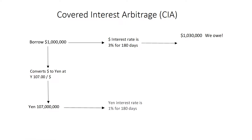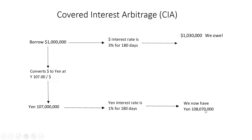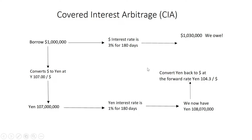Now, we're going to invest that yen at 1% for 180 days. It's going to grow over these six months to 108,070,000 yen. Now what we've got to do is convert that back into dollars. We can convert it back at the rate of 104.3 — we locked in that rate today. Back when we borrowed this money, we sold yen forward, and we knew we were going to have this much yen because we knew what the interest rate was. So we actually sold 108,070,000 yen back at the forward rate of 104.3. We locked in that trade six months ago.